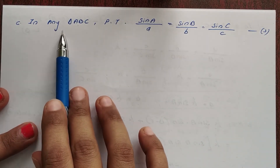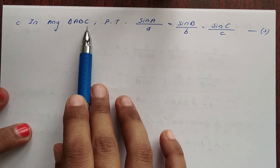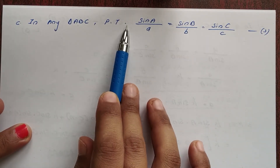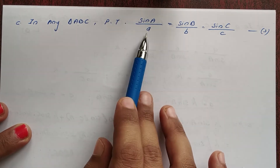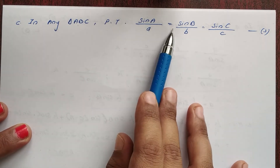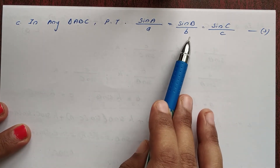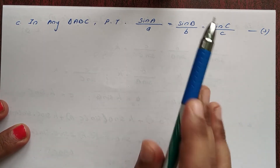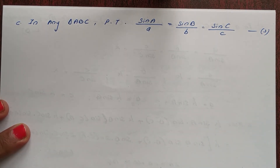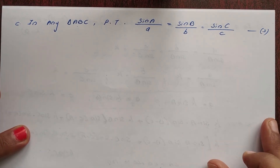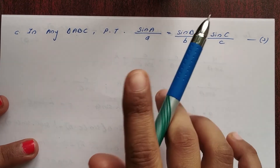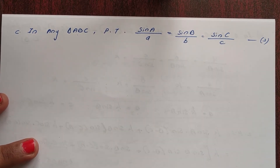Next question: In triangle ABC, prove that sin A over a equals sin B over b equals sin C over c. This is the sine law.